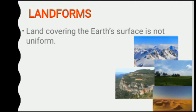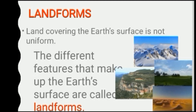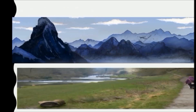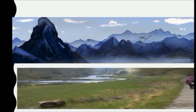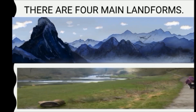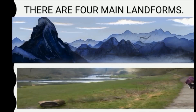There are different features that make up the earth's surface. As we have seen, earth is not uniform everywhere. At some places it rises high, while at other places it is flat. So there are different landforms of the world.